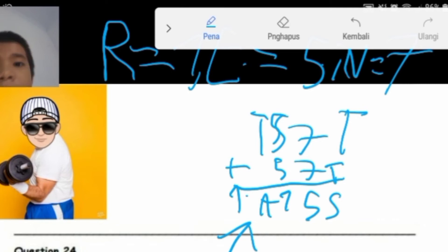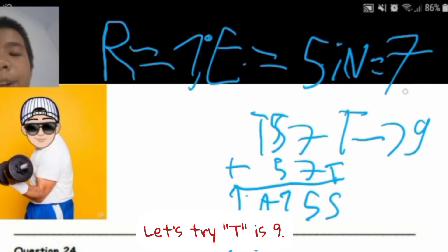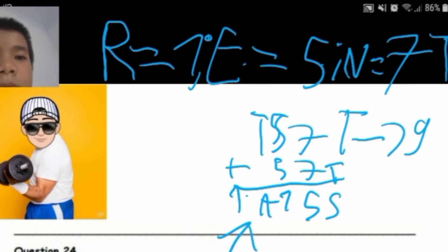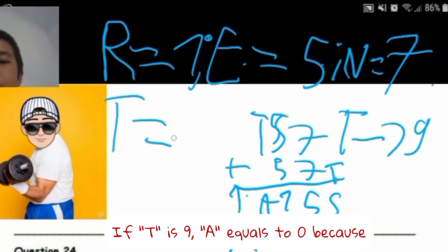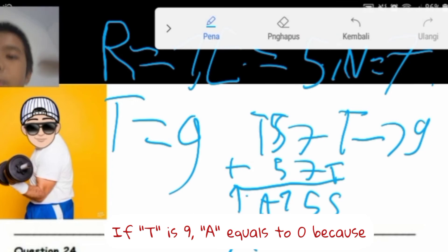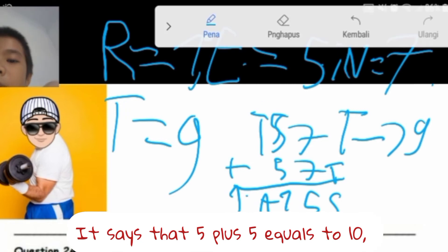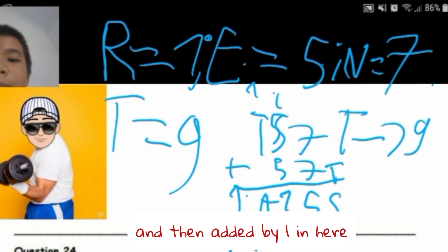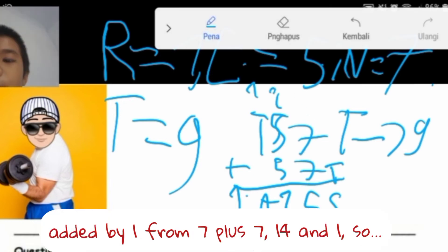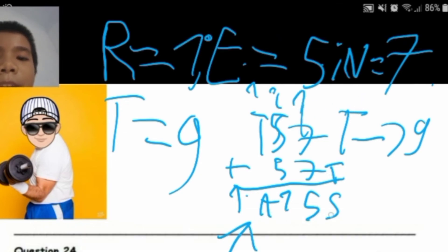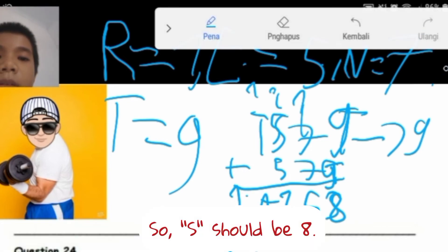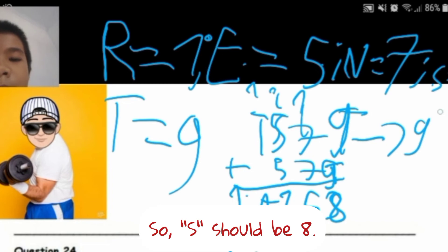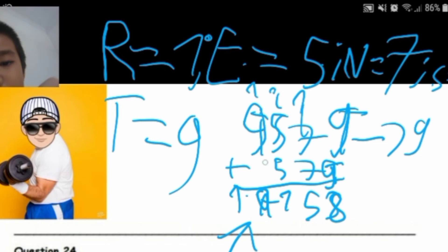Let's try T is 9. Since 5 plus 5 is 10, carry 1; then 7 plus 7 is 14 plus 1 is 15, carry 1; so T should be 9. If T is 9, then 9 plus 9 equals 18, so S should be 8. A is 0.